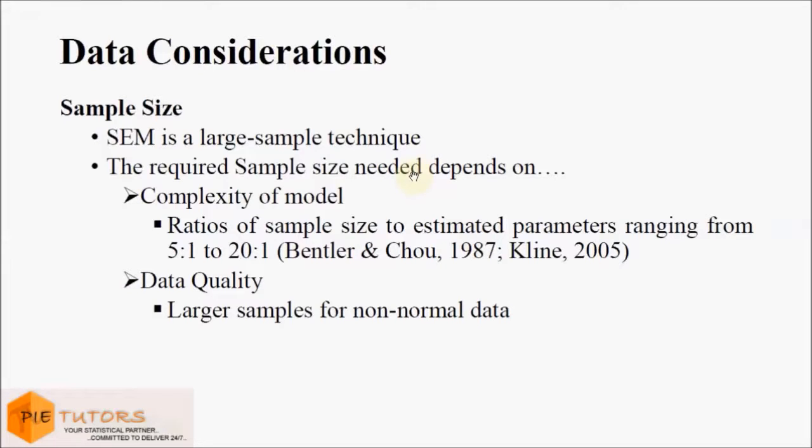So if we have a path model with 30 parameters to be estimated, we require a sample size between 150 to 600.